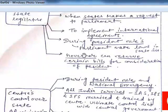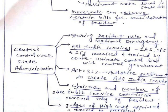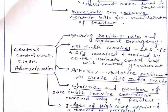Regarding the center's control over state administration: during President's Rule and national emergency, All India Services — IAS, IPS, IFS — are recruited and trained by the center, and ultimate control lies with the central government. Article 312 authorizes Parliament to create All India Services. The chairman and members of the State Public Service Commission can be removed only by the President, and judges of the High Court are appointed and removed by the President.